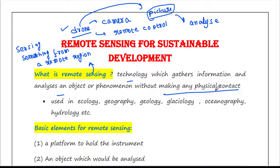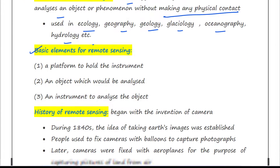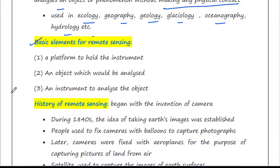This technology is used in numerous fields like ecology, geography, geology, glaciology, oceanography, hydrology, etc. Some basic elements for remote sensing are: first, a platform to hold the instrument; then an object which would be analyzed; and then an instrument to analyze the object.